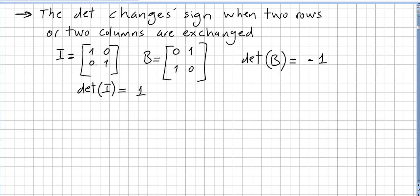So if you change two lines or if you change two columns, the determinant changes sign. You had 1 and now you have minus 1. And obviously you can see this in A, B, C, D.